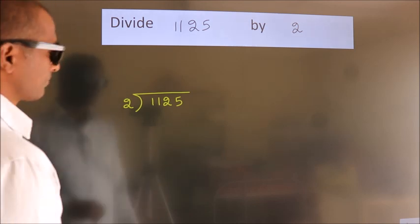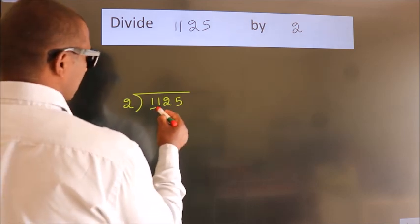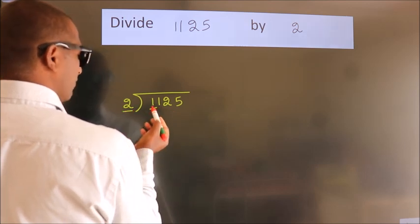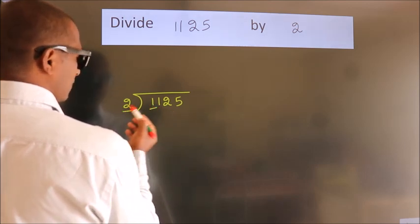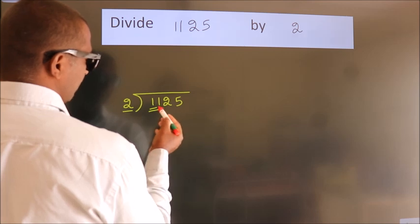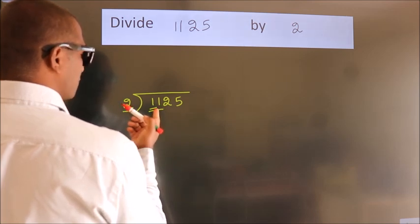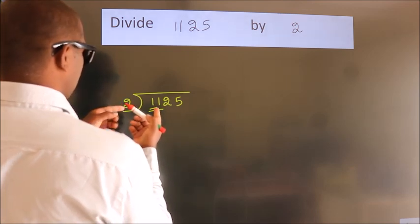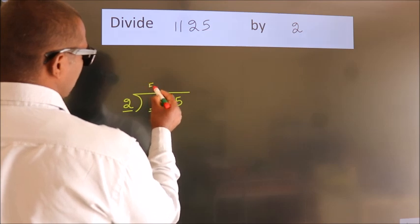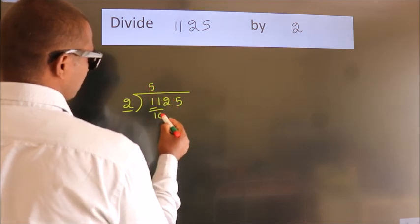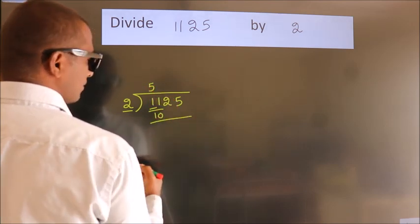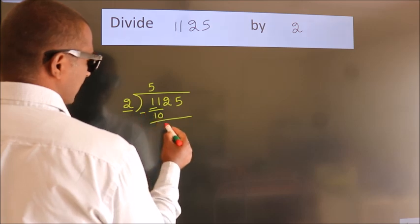Next, here we have 1, here 2. 1 is smaller than 2, so we should take 2 numbers, 11. A number close to 11 in 2 table is 2 fives, 10. Now we subtract, we get 1.